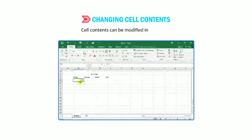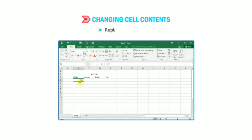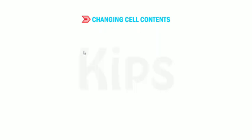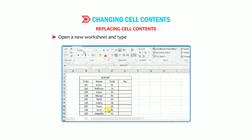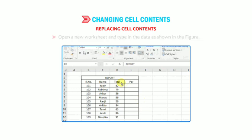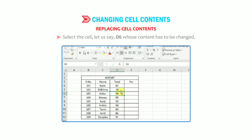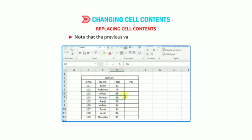Cell contents can be modified in two ways: replacing cell contents or using Edit mode. For the first method — replacing cell contents — you can edit the cell contents directly and replace them with a new entry. Open a new worksheet and type the data as shown in the figure. Select the cell, for example D6, whose contents are to be changed. Now type 65 in that cell and press Enter. Note that the previous value 56 is replaced with 65. Similarly, try to change the contents of other cells.